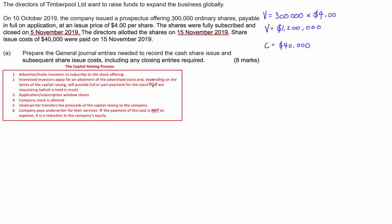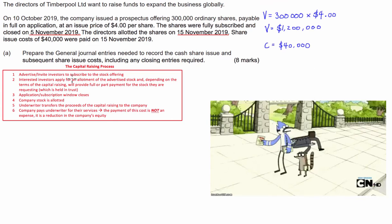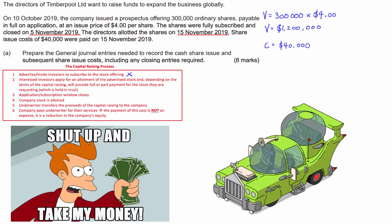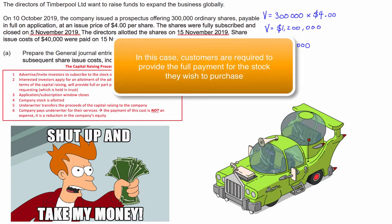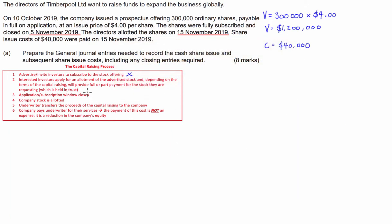The most important step in ensuring you get questions like this consistently correct in exams is to understand and commit to memory what the capital raising process is. So the first thing is we've got to advertise and invite investors to subscribe to the stock offering — that's not going to require an accounting entry. The next thing is interested investors apply for an allotment of the advertised stock, and depending on the terms of the capital raising, they'll either provide a full payment or part payment of the value of the shares they're applying for. That is going to require an accounting entry.